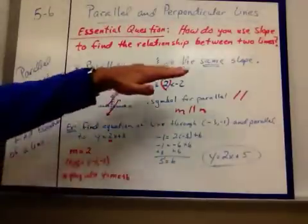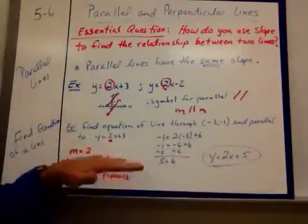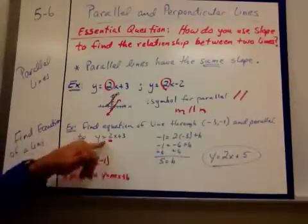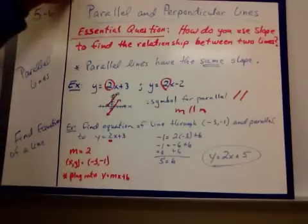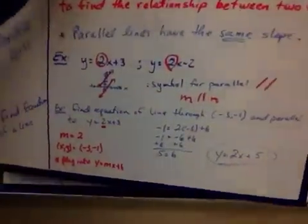So parallel lines have the same slope. If they give you one equation and they want to know parallel, you know they have the same slope, and just take the point it's going through for x, y and plug it in. Find your b, rewrite your equation.